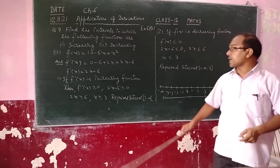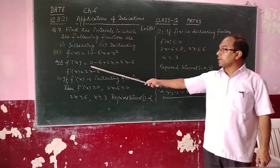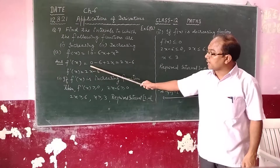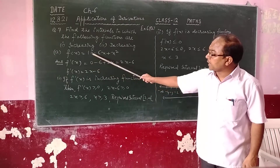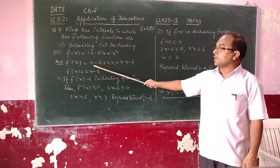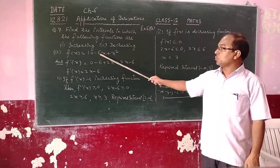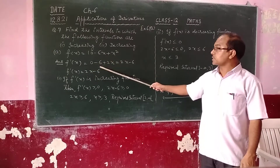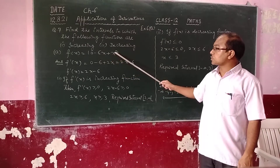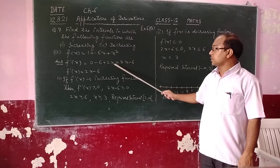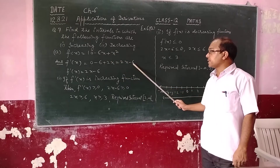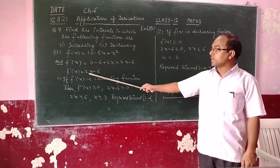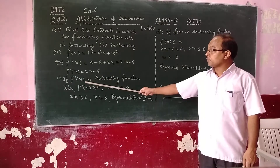So f'(x): the derivative of 10 is 0, the derivative of -6x is -6, and the derivative of x² is 2x. So f'(x) = 2x - 6.